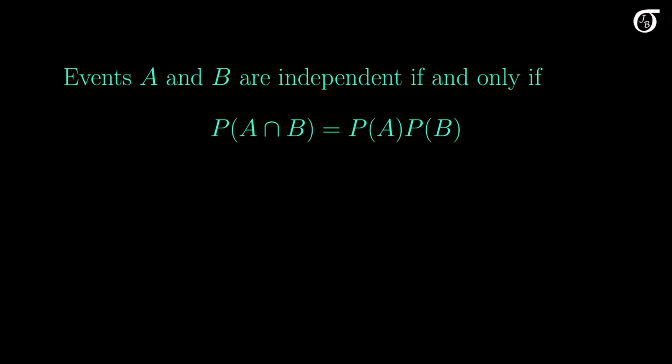Here's our formal definition of independence. Events A and B are independent if and only if the probability of the intersection P(A∩B) equals the product of the individual probabilities P(A)P(B).